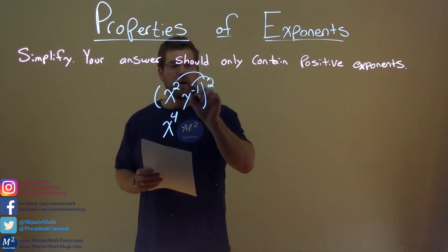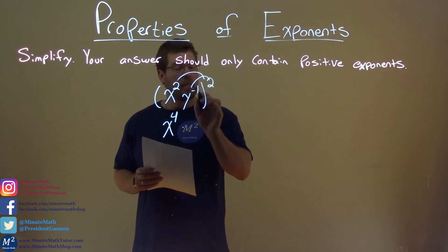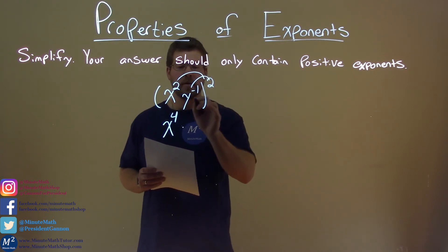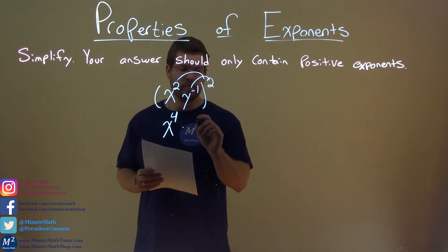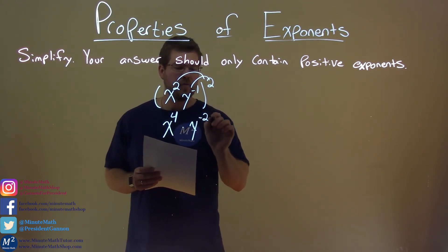Do the same thing with the y. y to the negative 1 power all squared is y to the negative 1 times 2, and negative 1 times 2 is negative 2, y to the negative 2 power.